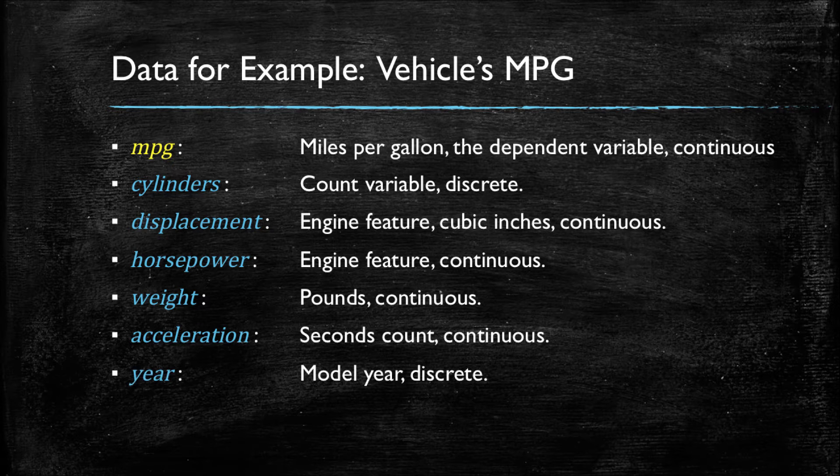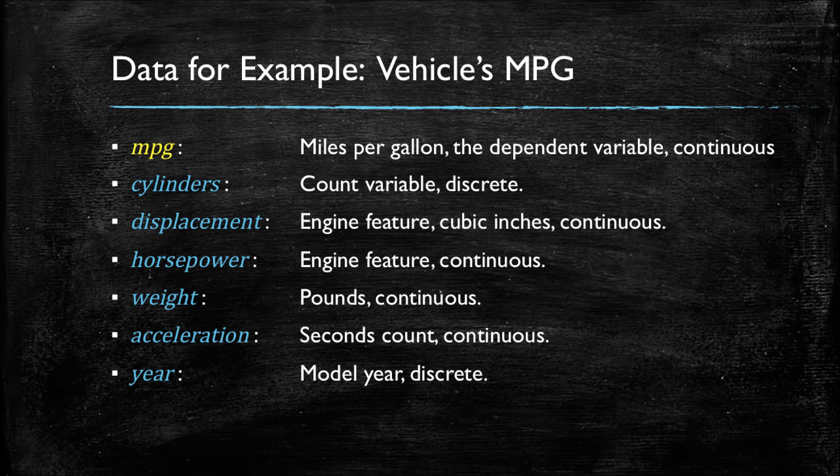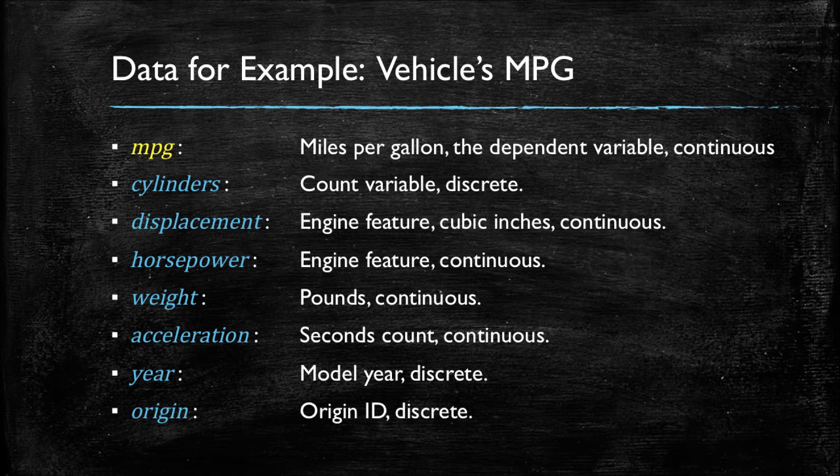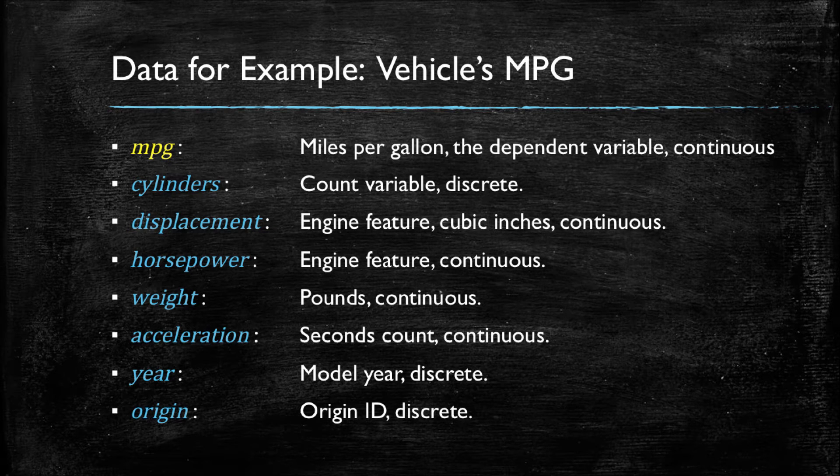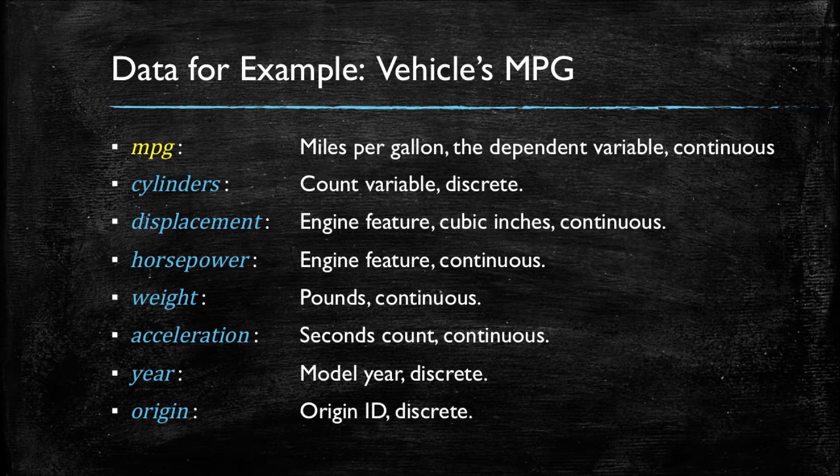Acceleration is measured in the number of seconds a car needs to reach a certain speed. We will then have the model's year, the year in which the car was manufactured. And we finally have origin, which is a discrete integer number, which is the ID of where the car comes from.